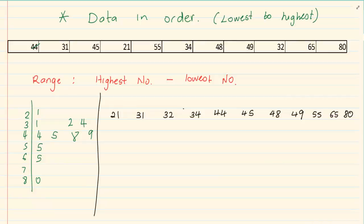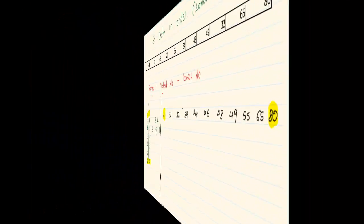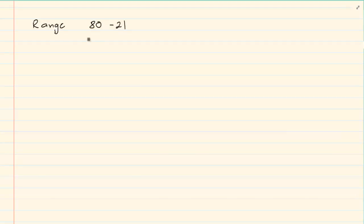Now, what is the range? Range is highest minus lowest. Whether you use the tree diagram or the row, it is still 80 minus 21. So the range is equal to 80 minus 21, which is equal to 59.